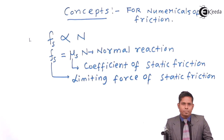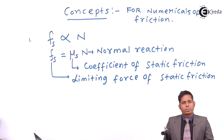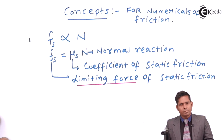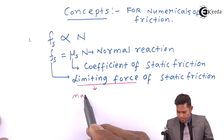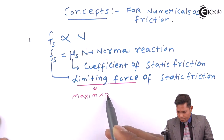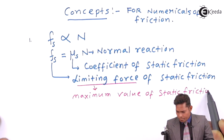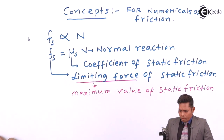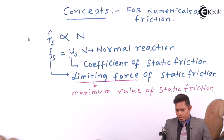Fs is the limiting force of friction — that is, the limiting force of static friction. Limiting means the maximum value of static friction. So this is the maximum value of static friction.